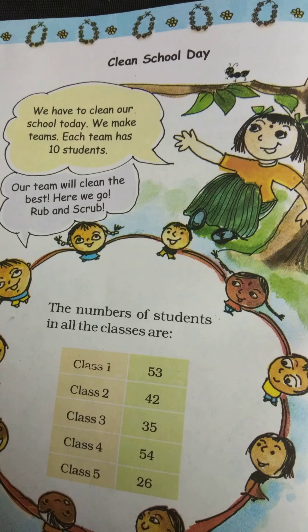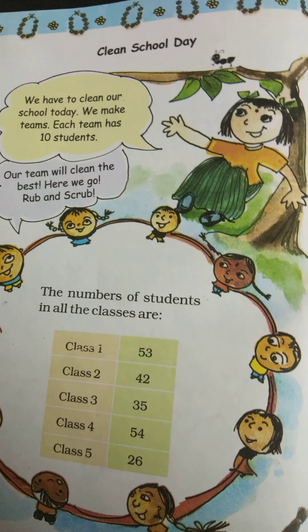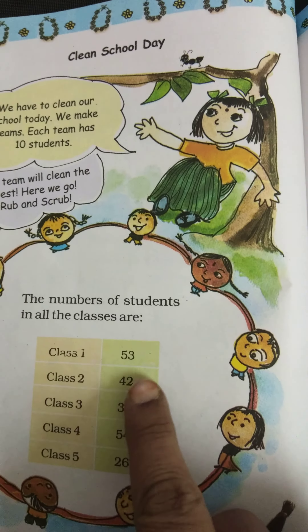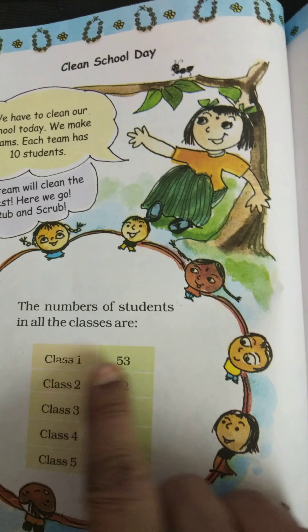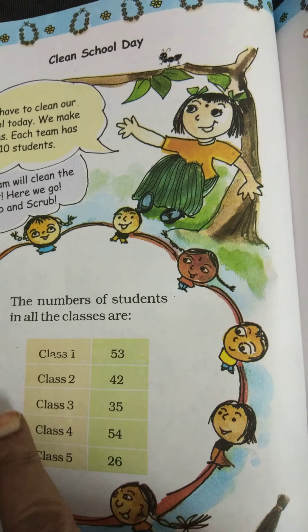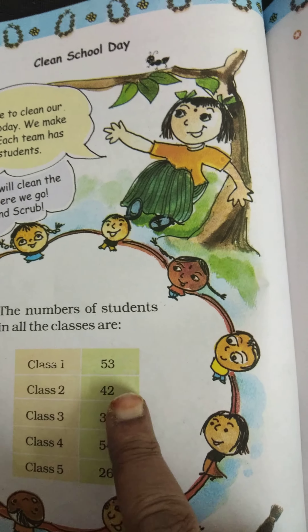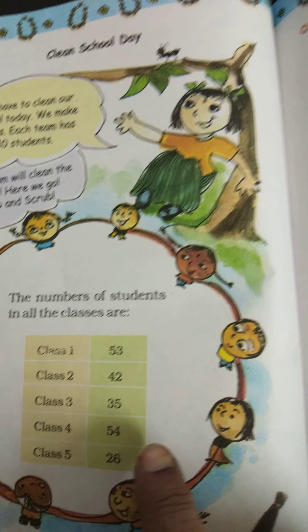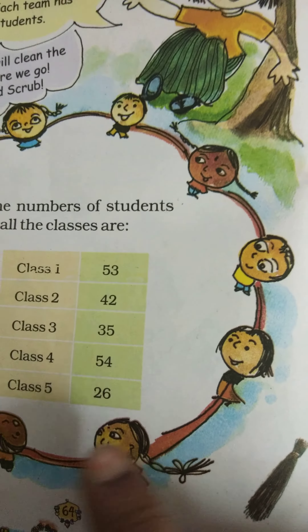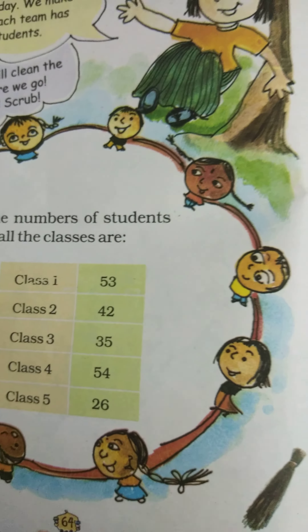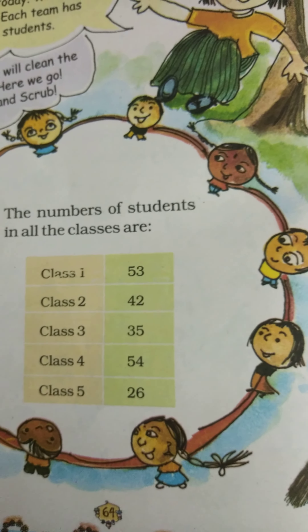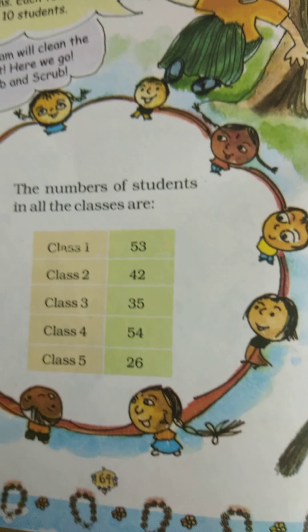Rub and scrub. This is the strength of the class: Class 1 has 53 students, class 2 has 42, class 3 has 35, class 4 has 54, and class 5 has 26.